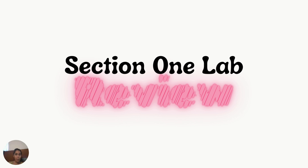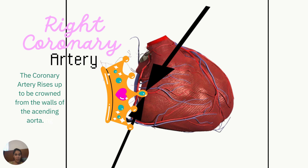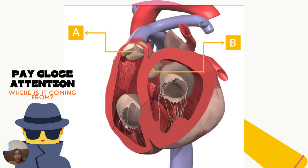Let's review some lab questions. This is not all-comprehensive — you still need to do your lab and review the point-to-this, point-to-that sheets. For the heart, they want you to understand the areas and anatomy. The right coronary artery rises up from the ascending wall of the aorta. I put a little crown there so you can identify where it is. Look closely at the image.